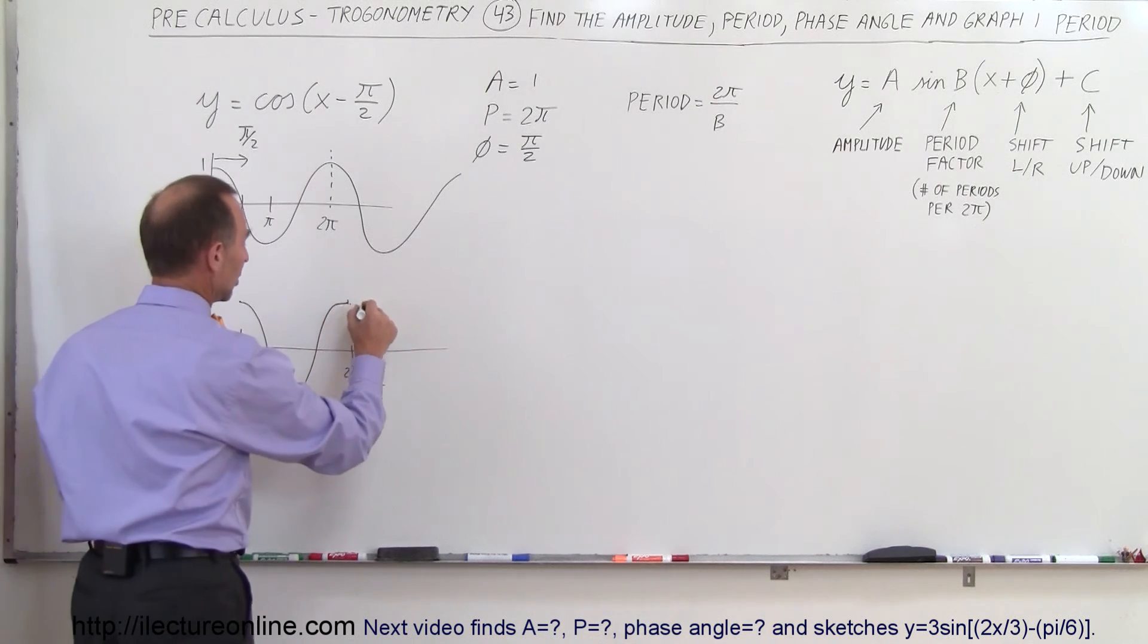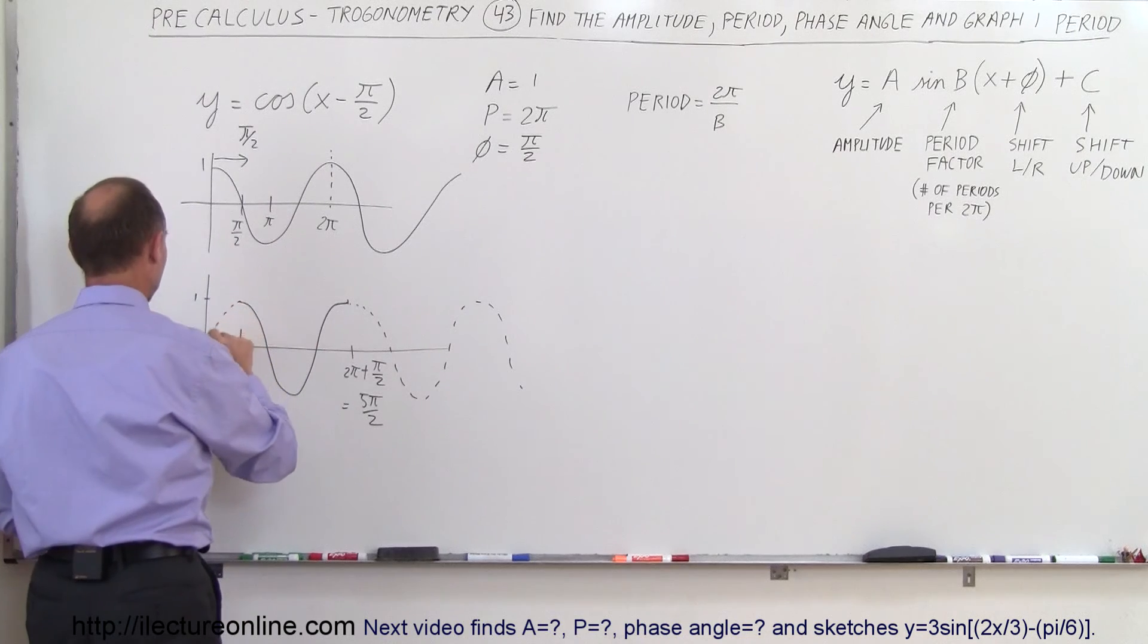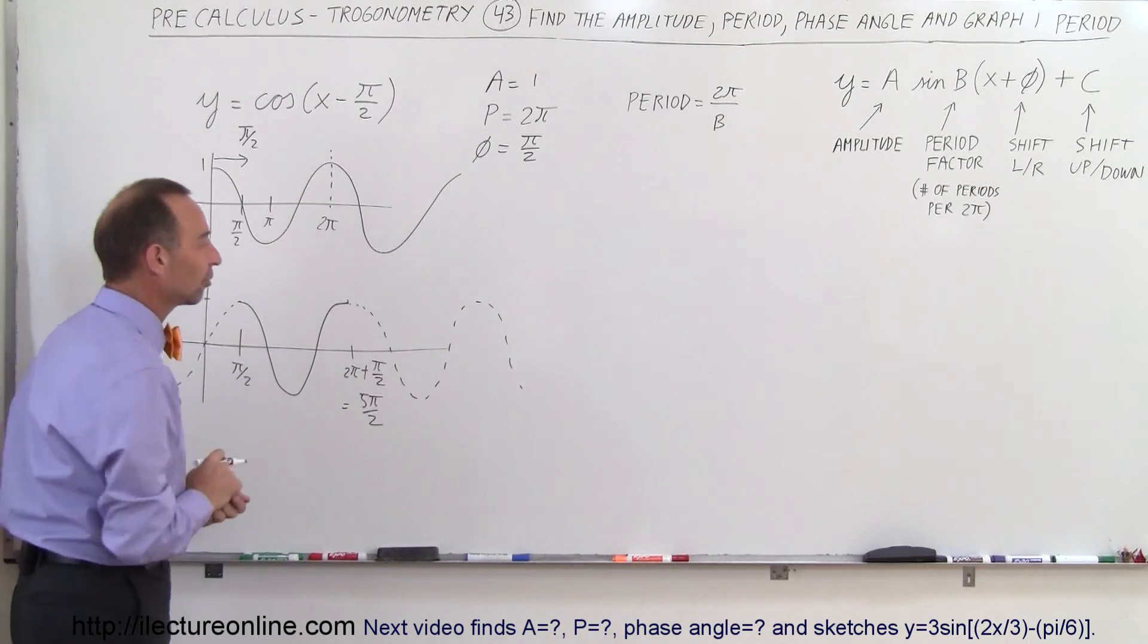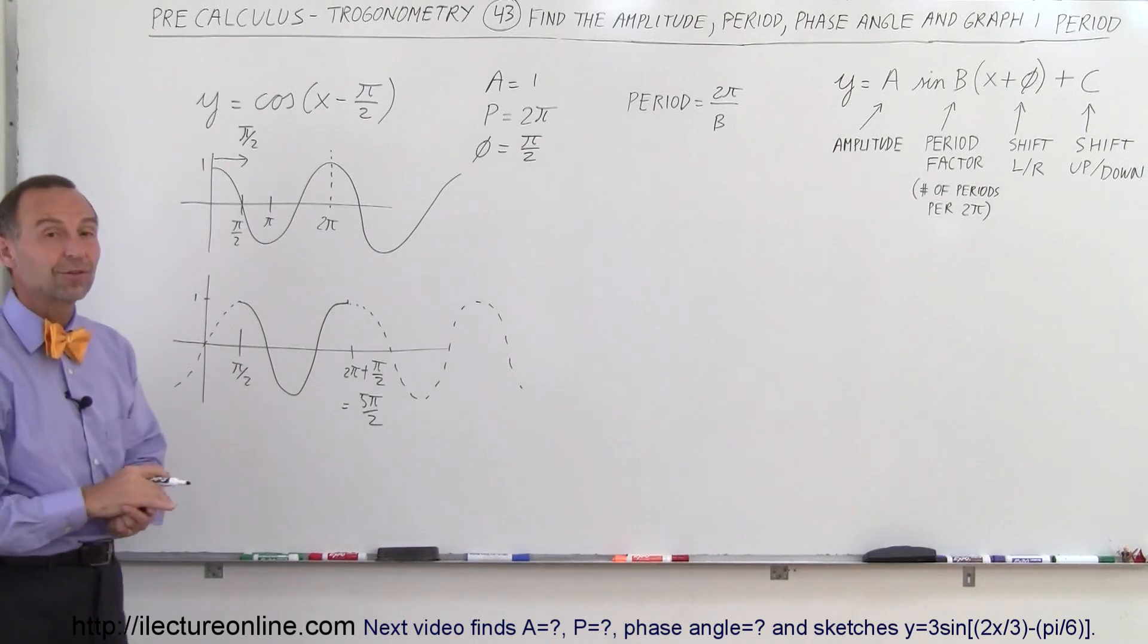And of course, if you were to continue it, it would look like that. It goes on this way like this. And that's what the function looks like: y equals cosine of x minus π/2.